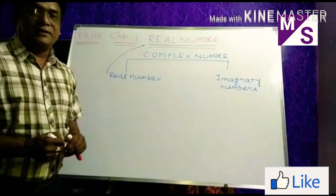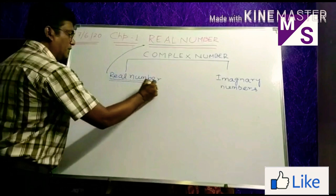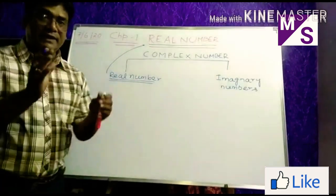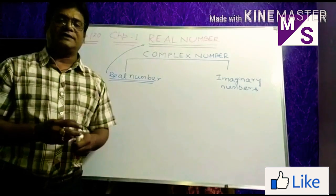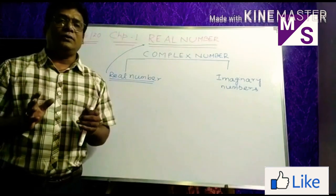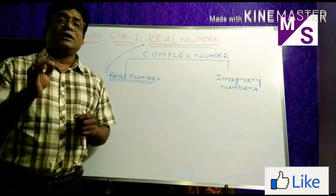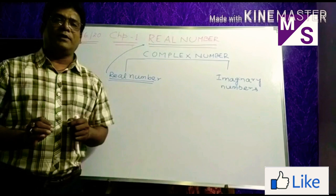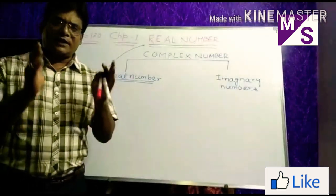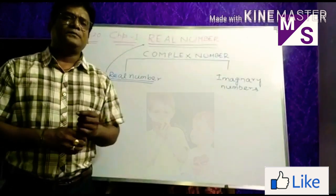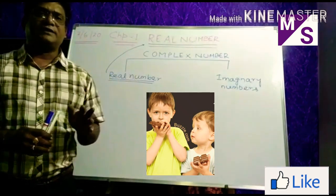When I come to real number, this particular number system again consists of many number systems. As you know from earlier classes, we have already gone through many number systems. The first number system is called natural number — natural number means the number which comes spontaneously, naturally. For example, one mother is having two kids.